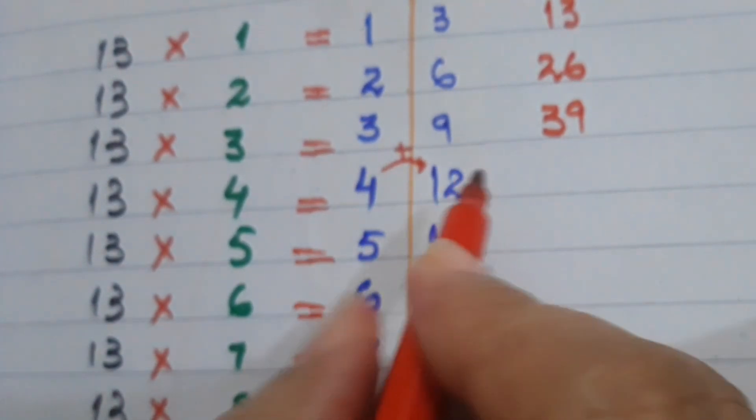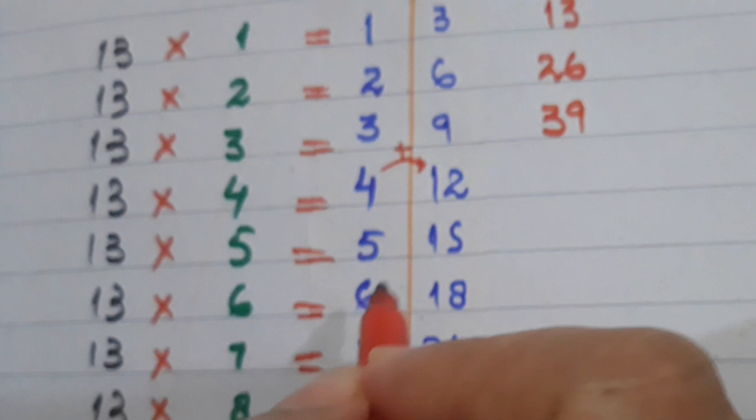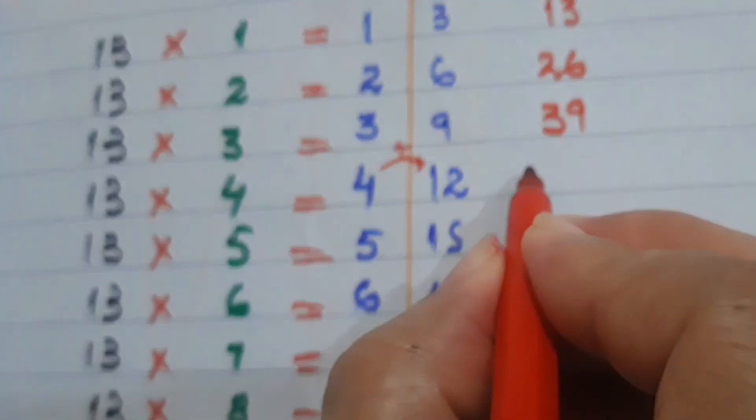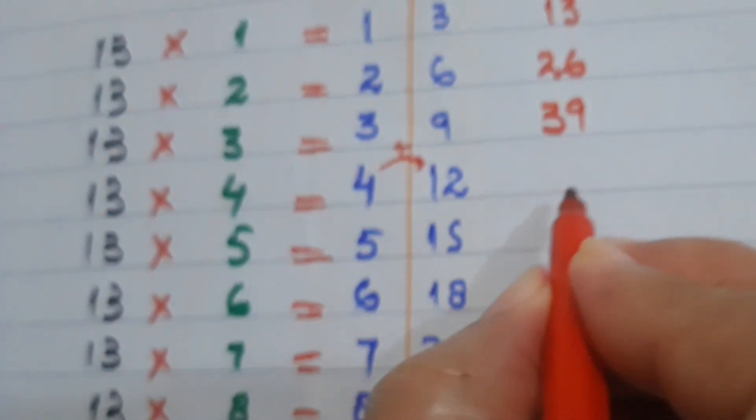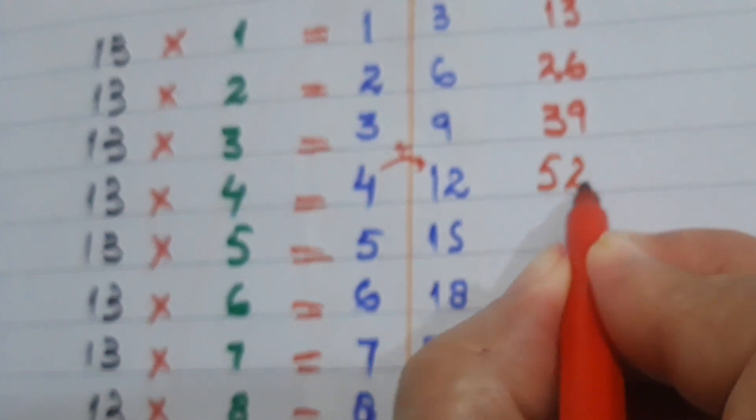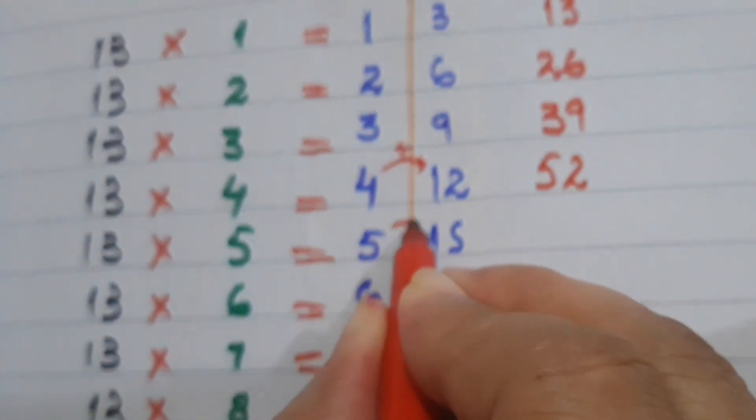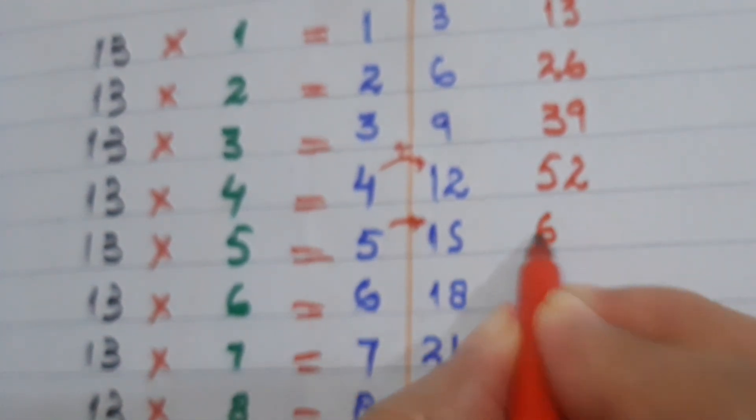Now what we will do is add the first number with the first digit of the second number, just like 4 plus 1 is 5, and 2 will be written as it is.